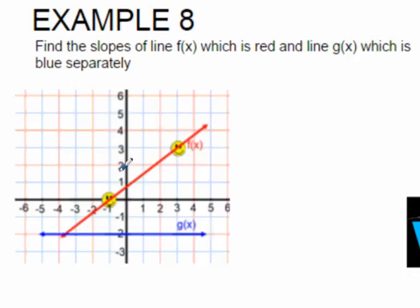We are trying to find the slope of f of x and g of x. f of x is a positive line, so the slope is definitely going to be positive because it's going up from left to right.